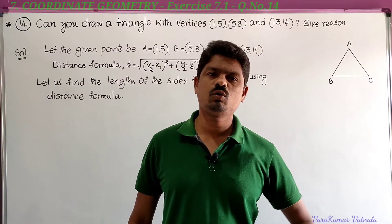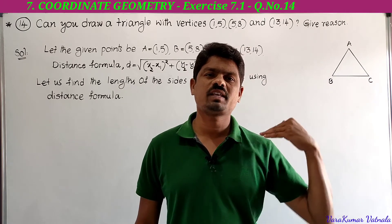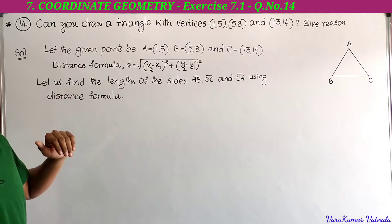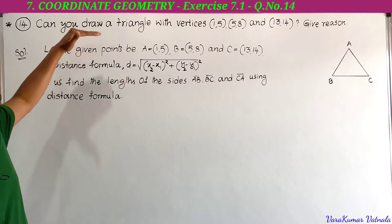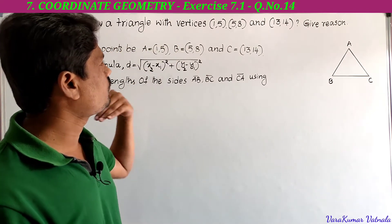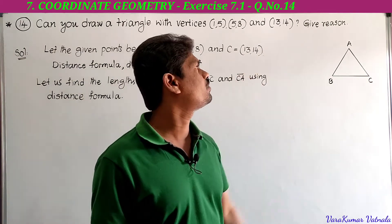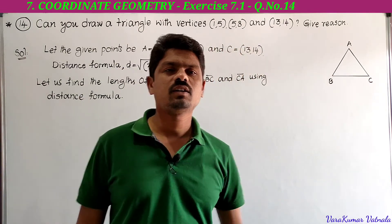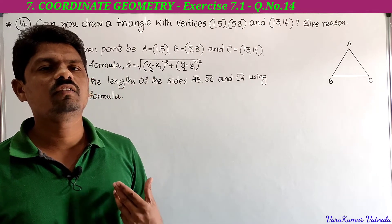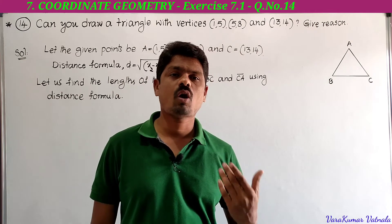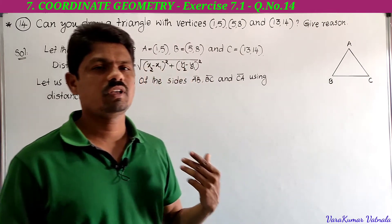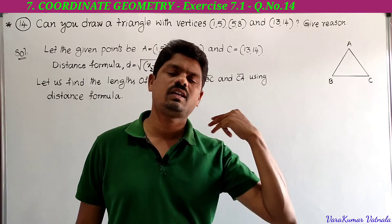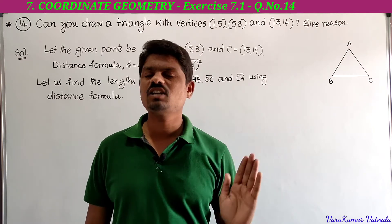Hi, welcome to my channel. Today we are going to solve problem 14 from exercise 7.1, chapter 7 on coordinate geometry. The question asks: can you draw a triangle with vertices at (1,5), (5,8), and (13,14)? Give a reason. So here three points are given, and we need to determine whether a triangle can be drawn with these points as vertices.